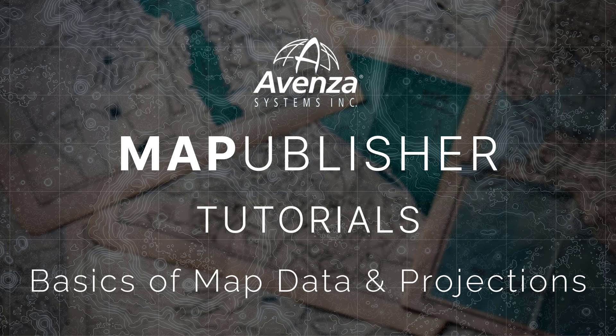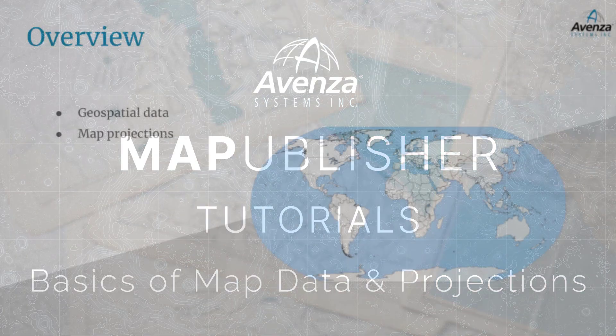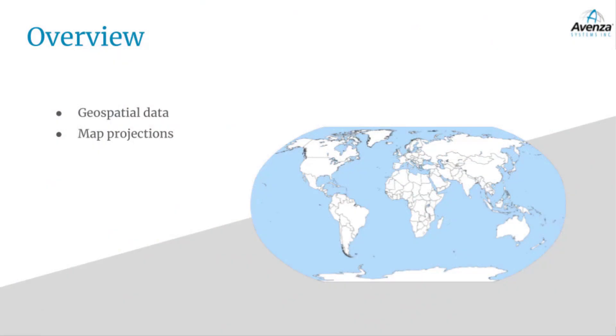Welcome back to the events and mapping class video series. This video will cover some of the basic concepts that are important to know when creating maps. The two main things discussed in this video are the meaning of geospatial data and the significance of map projections. Understanding these concepts is important to informing the creation of your maps.